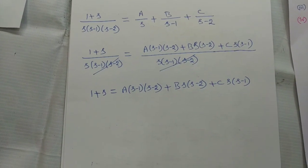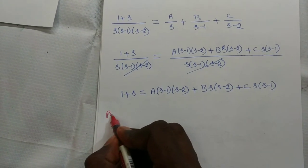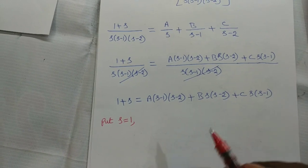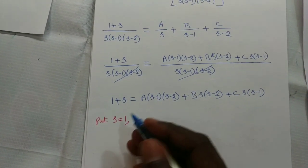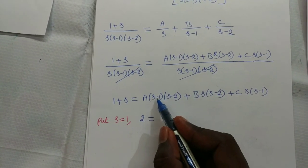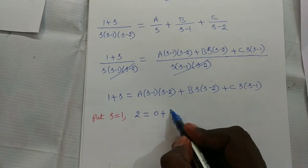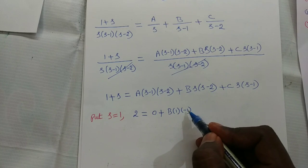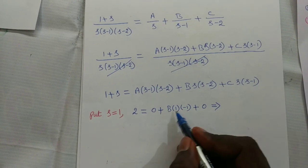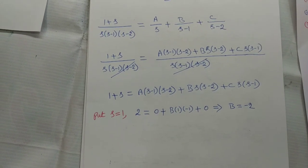To find the constants, substitute values for s. Putting s equal to 1: 1 plus 1 equals 2; the A and C terms vanish, giving B times 1 times (1 minus 2) equals minus B equal to 2, so B equal to minus 2.